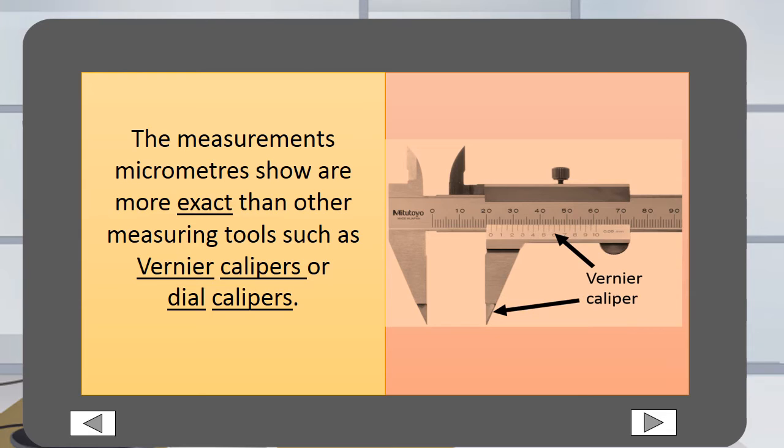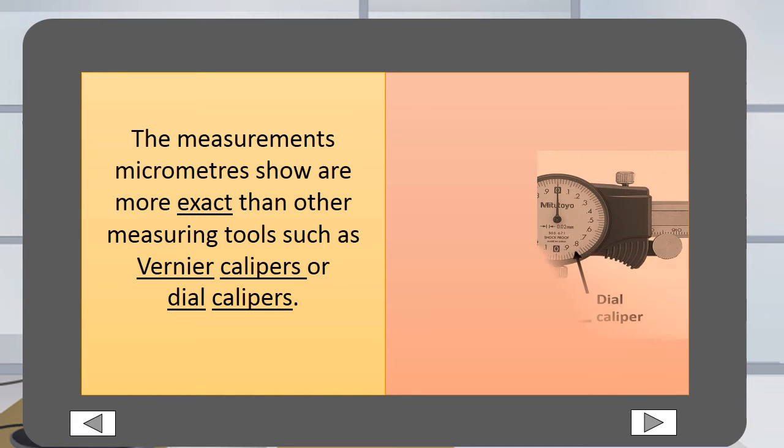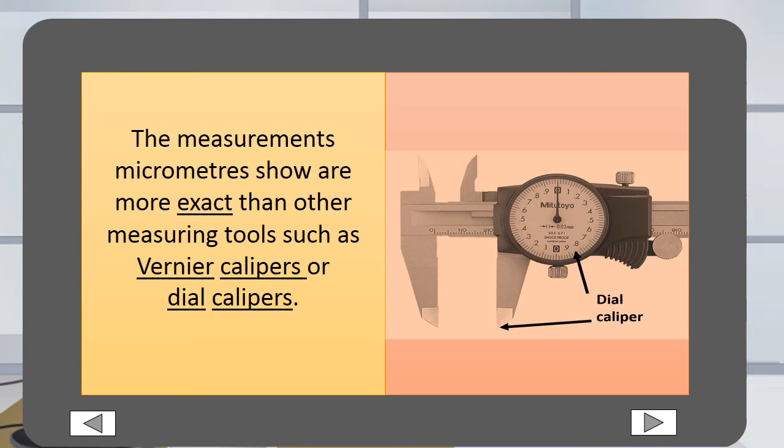Here is a veneer caliper. It has a veneer scale that gives you a size less than one and can measure internal and external sizes. This is a dial caliper. It has the ability to measure internal and external sizes, but has a dial like a clock to give you the size less than zero.